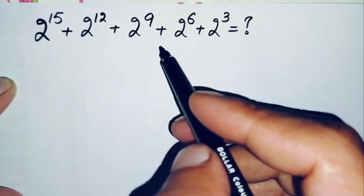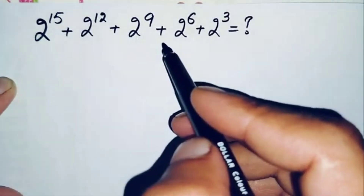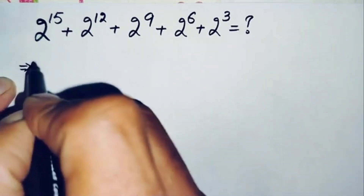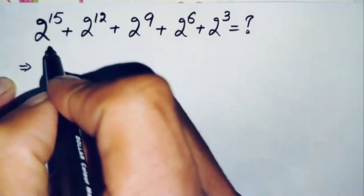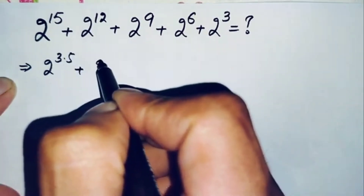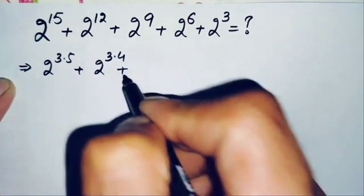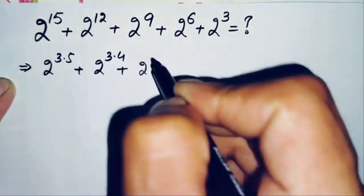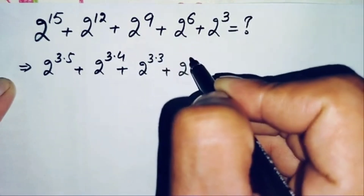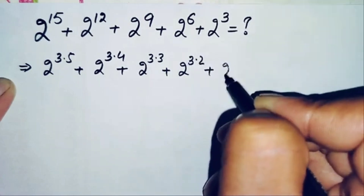Now how can we solve this exponential simplification math problem? First, we will factorize the powers of these terms. So here we can factorize: 2 raised to power 15 can be written as 3 times 5, plus 2 raised to power 3 times 4, plus 2 raised to power 9 is 3 times 3, plus 2 raised to power 6 which is 3 times 2, plus 2 raised to power 3.